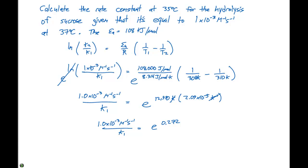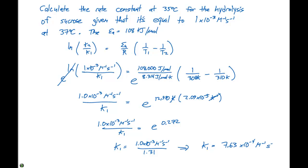So we have 1.0 times 10 to the minus three molar to the minus one second to the minus one, divided by K1, equal to e to the 0.272, which is 1.31. Rearranging, K1 equals 1.0 times 10 to the minus three divided by 1.31, giving 7.63 times 10 to the minus four molar to the minus one second to the minus one.